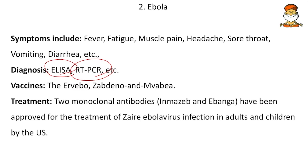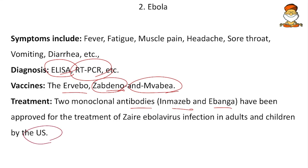Vaccines for Ebola include Ervebo, Zabdeno and Mvabea. Unlike Zika, Ebola does have a vaccine. For treatment, two monoclonal antibodies — Inmazeb and Ebanga — have been approved for treatment of Zaire Ebola virus infection in adults and children by the US. So for Ebola, both vaccines and treatments are available.